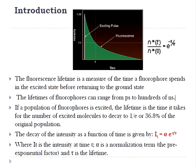We can mathematically represent it as: if n*(t) is the number of excited molecules at any time t, and n*(0) is the number of excited molecules at t equals 0, then n*(t)/n*(0) equals e raised to minus t by tau. The decay of intensity as a function of time is given by I(t) = α·e^(-t/tau), where I(t) is the intensity at any time t, α is a normalization constant, and tau is the fluorescence lifetime. Knowledge about the excited state lifetime of a fluorophore is crucial for numerous measurements including quenching, polarization, and FRET.